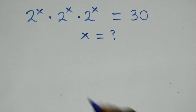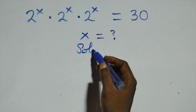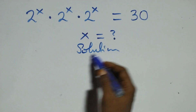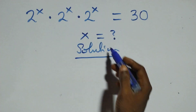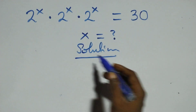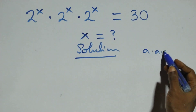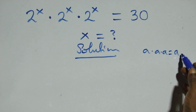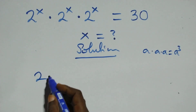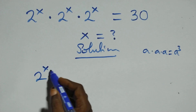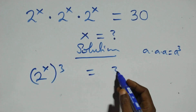Hello, you're welcome. Here we solve a nice exponential equation. We have two raised to power x, times two raised to power x, times two raised to power x, equals thirty. Since a times a times a can be written as a raised to power three, this becomes two raised to power x, raised to power three, equals thirty.